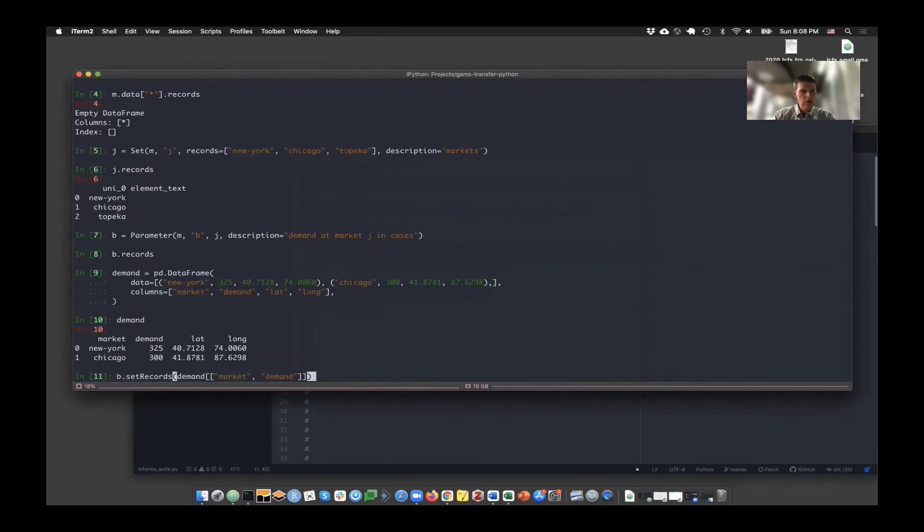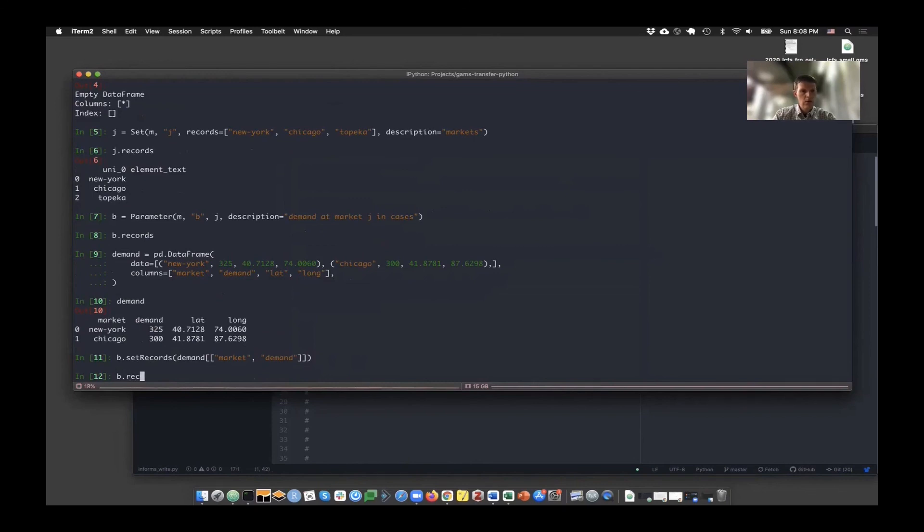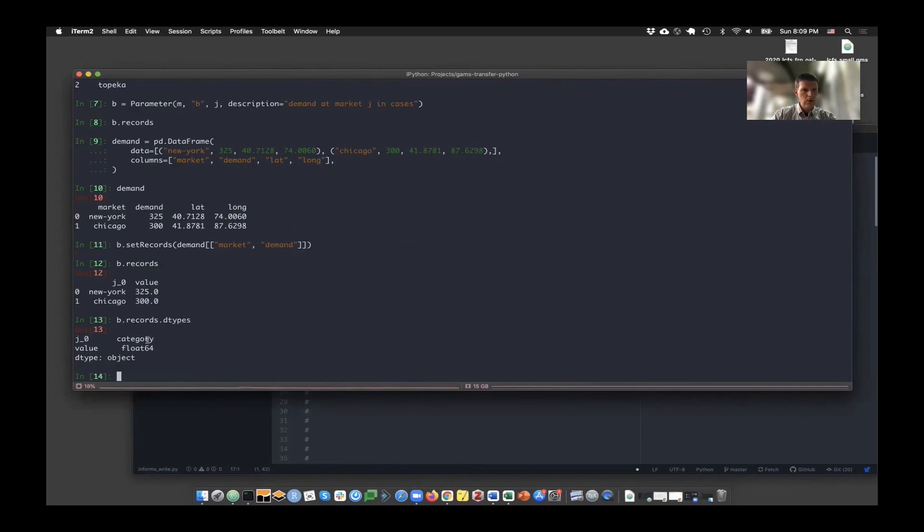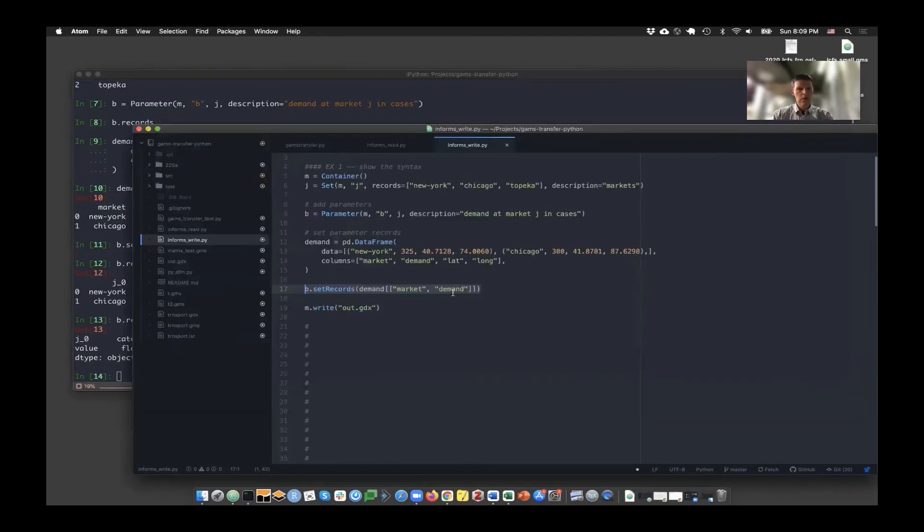I want to set the records of the object B to include just the market and demand columns here. So now I can do B records and it's standardized the data. You note that it changed the column headings as well as standardizing the actual data types. We use categoricals throughout our base types to do a lot of the linking or to enable a lot of the linking.